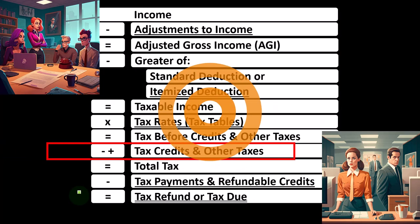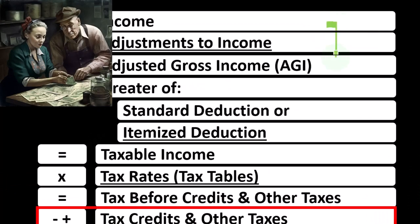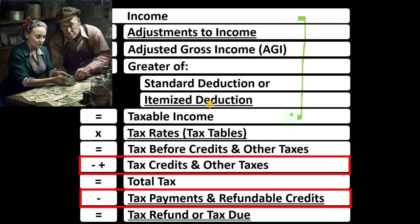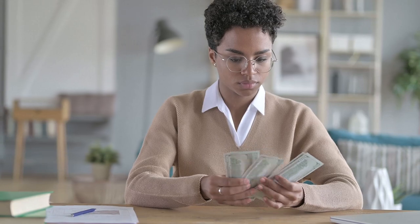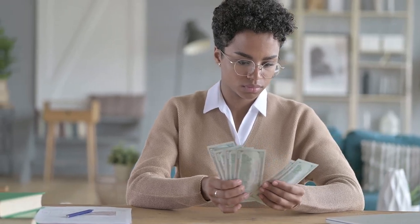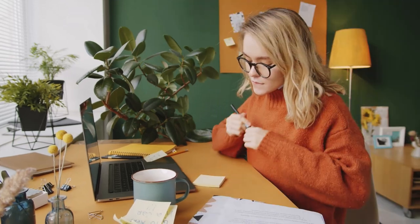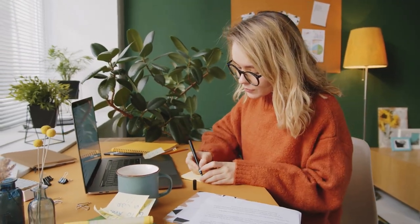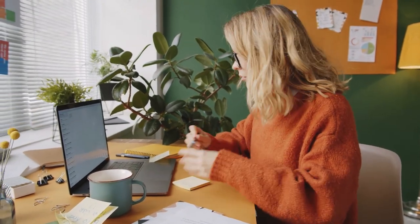Looking at the income tax formula, we're at the bottom where the credits are located. The first half of the income tax formula is essentially an income statement ending at taxable income, similar to the bottom line of a normal income statement. We then calculate the tax on the taxable income using the progressive tax system to get to the tax before credits. Finally, we apply credits and other taxes like self-employment tax, then apply payments such as withholding or estimated tax payments to arrive at the tax refund or tax due.